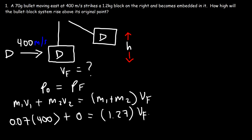Now we can find the final speed: 0.07 times 400 divided by 1.27. The final speed of the bullet-block system is 22.05 meters per second.